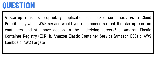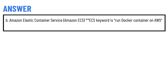Option A: Amazon Elastic Container Registry (ECR). Option B: Amazon Elastic Container Service (ECS). Option C: AWS Lambda. Option D: AWS Fargate. The correct answer is Option B — Amazon Elastic Container Service (ECS). The keyword is: run Docker containers on AWS.